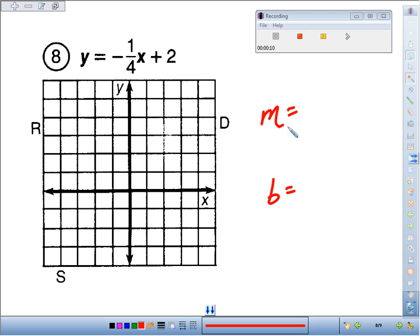to graph this very fast. M, the coefficient of x, is negative 1/4. Our y-intercept, the number by itself, is 2, and that's where we want to begin. Begin by plotting your y-intercept at 2, a slope of negative